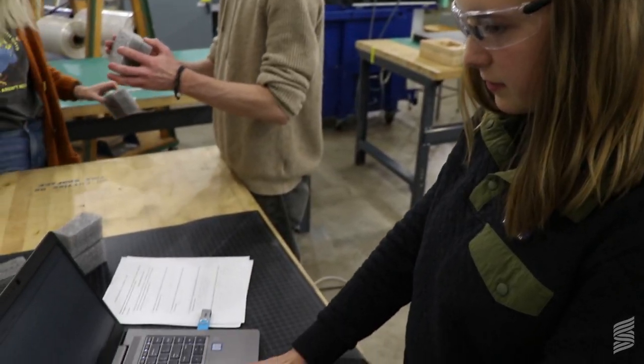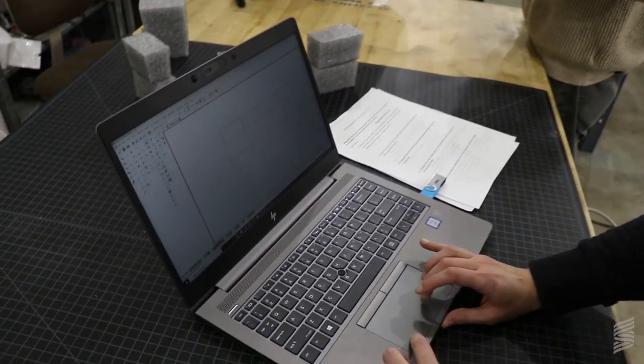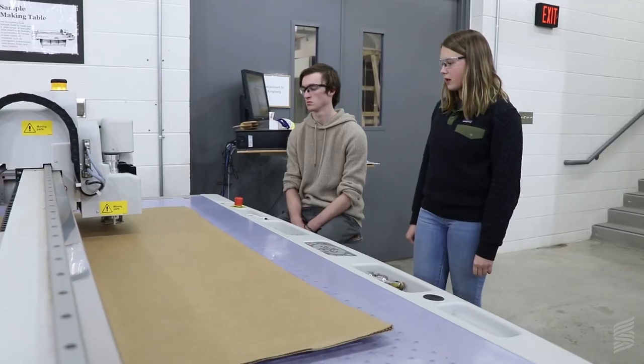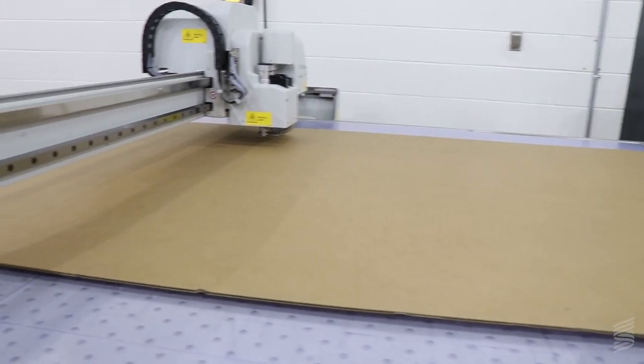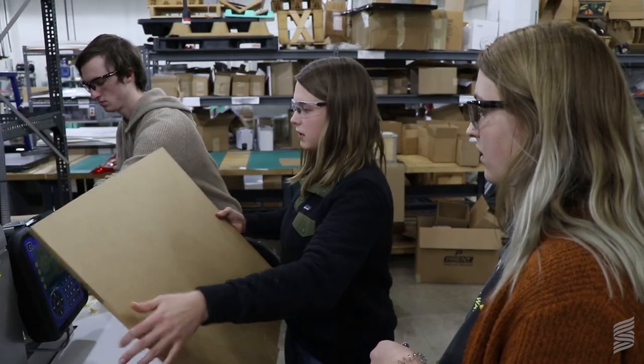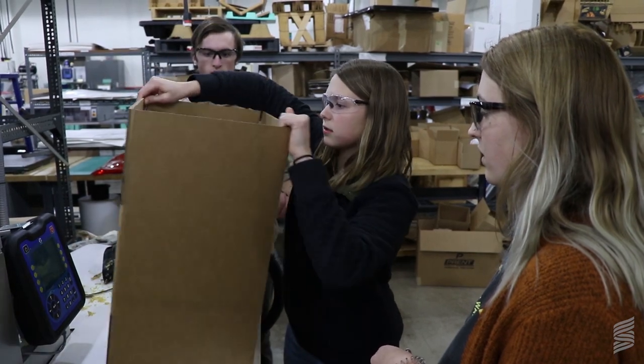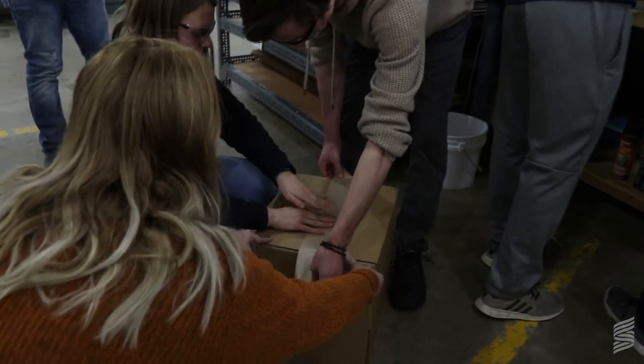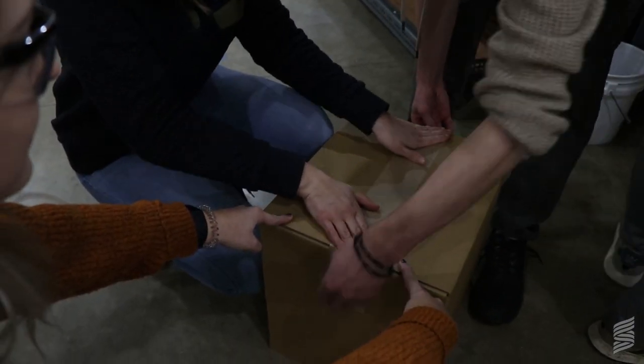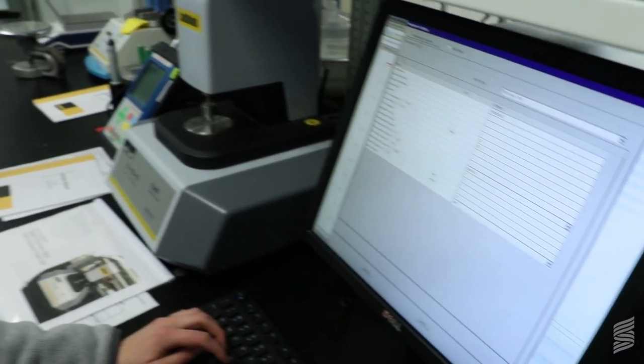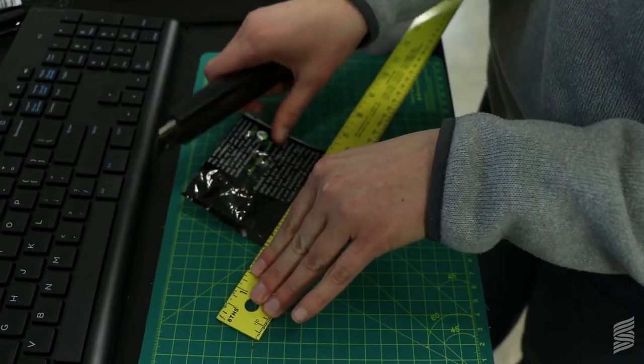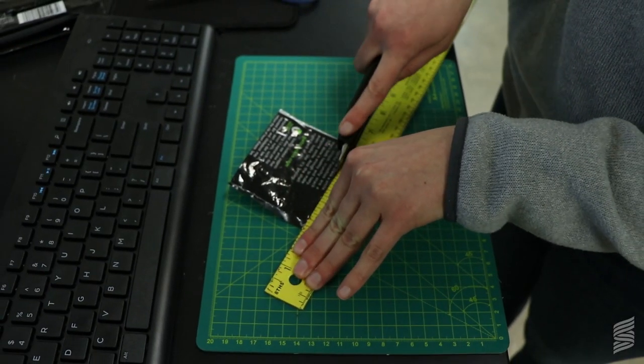Packaging capstone involves designing a project for a company and optimizing their packaging by cutting costs, making it more sustainable, or addressing whatever parameters the company needs. In that course you use all the knowledge from your other packaging classes—materials, design, and testing—and implement them into the entire design process.